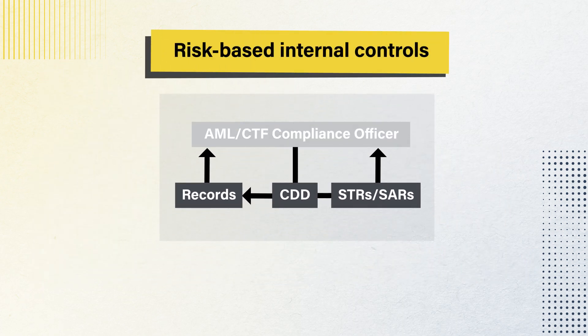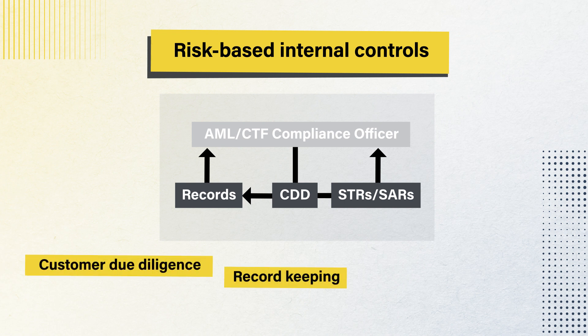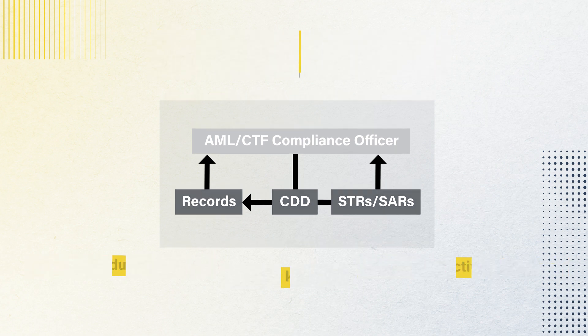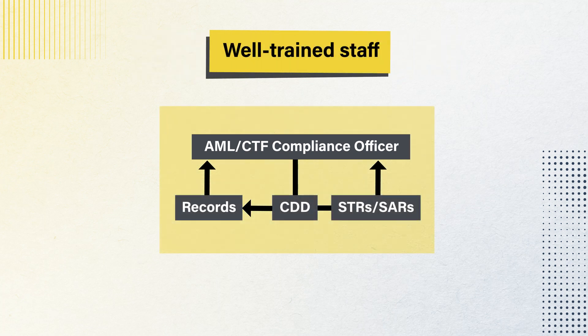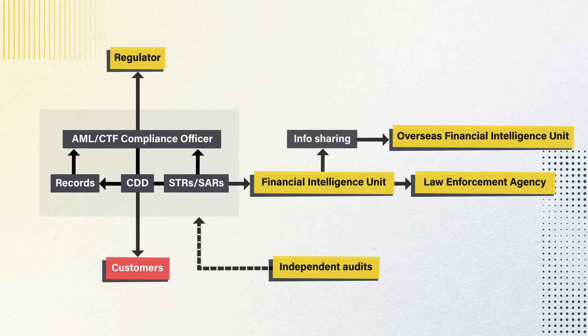One: risk-based internal controls enabling customer due diligence, record keeping and suspicious activity reporting. Two: a designated compliance officer accountable to regulators. Three: well-trained staff equipped to carry out their duties. Regular, independent audits ensure a compliant, effective program which must proactively counter financial crime for the AML ecosystem to function at its best.